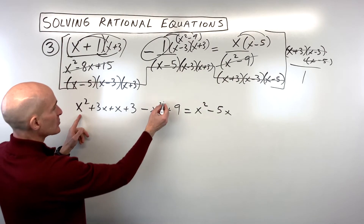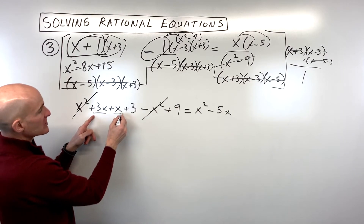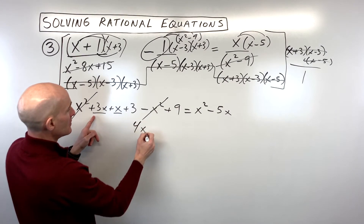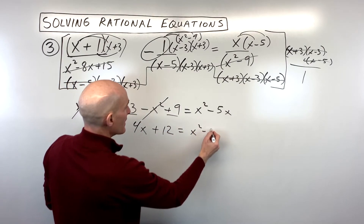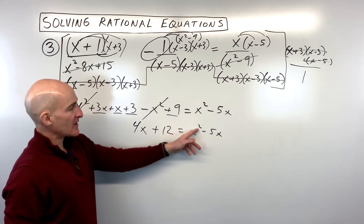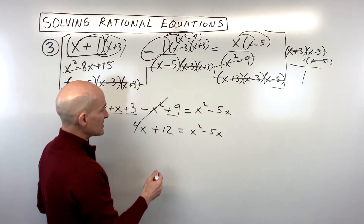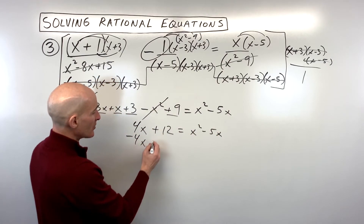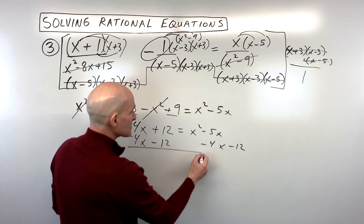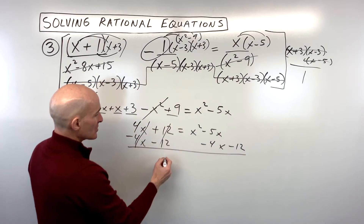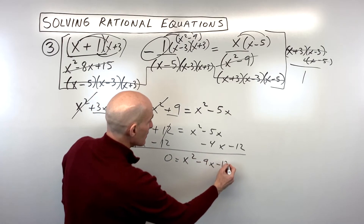Now let's see what we have. We have negative x squared and positive x squared — those cancel. We have 3x plus x is 4x, and 3 plus 9 is 12. That equals x squared minus 5x on the right side. Because we have an x squared term and an x to the first term, I'm going to get everything on one side and set it equal to 0. Subtracting 4x and 12 from both sides, we're left with 0 equals x squared minus 9x minus 12.